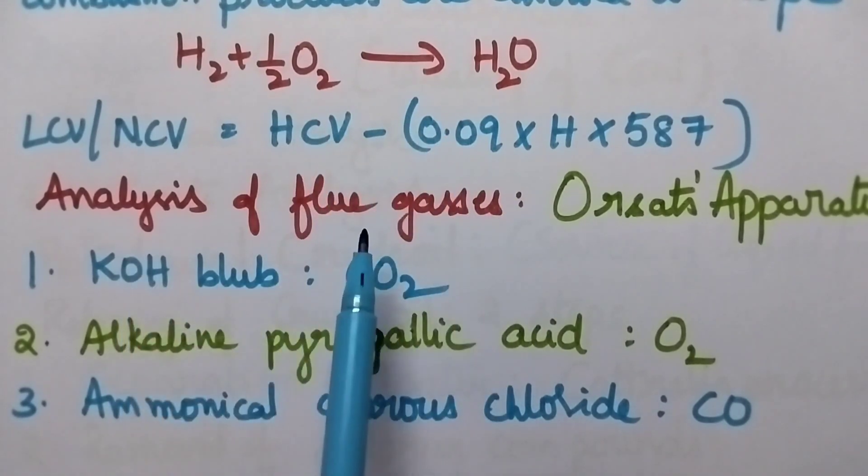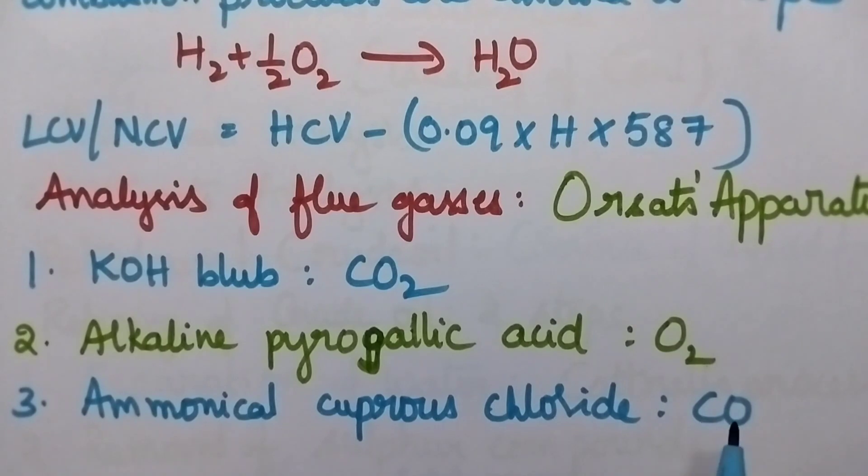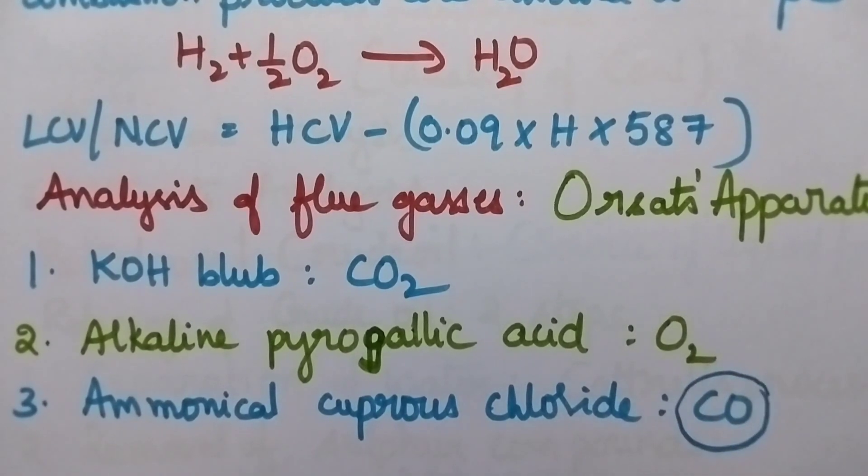The flue gas analysis can be done by using ORSAT apparatus which consists of three bulbs. First bulb consists of KOH and here the amount of carbon dioxide present in the flue gas can be estimated. By using alkaline pyrogallic acid, the amount of oxygen present in the flue gas can be estimated. And finally, by using ammoniacal cuprous chloride bulb, if there is any carbon monoxide present in the flue gas, it can be estimated. If carbon monoxide is found, that means the combustion is not complete. So the combustion process is incomplete.